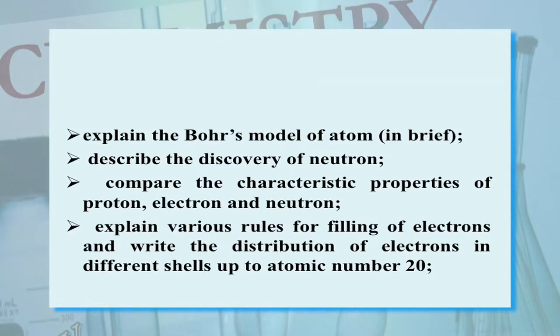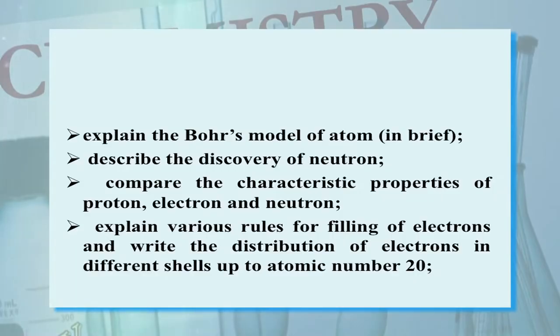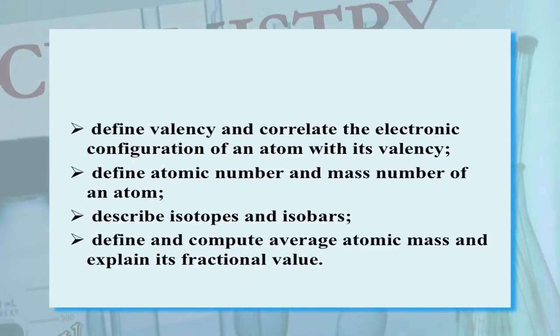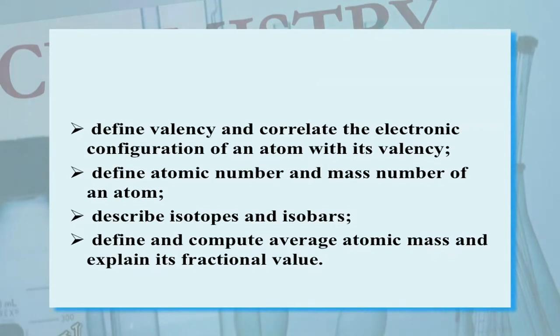You will be able to explain various rules for filling of electrons and write the distribution of electrons in different shells up to atomic number 20. Define valency and correlate electronic configuration of an atom with its valency. Define atomic number and mass number of an atom, describe isotopes and isobars, and define and compute average atomic mass and explain its fractional value.